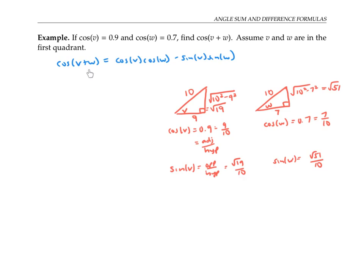Now we're ready to plug into our formula. So we have that cosine of v plus w is equal to 0.9 times 0.7 minus the square root of 19 over 10 times the square root of 51 over 10. Using a calculator, this works out to a decimal approximation of 0.3187.